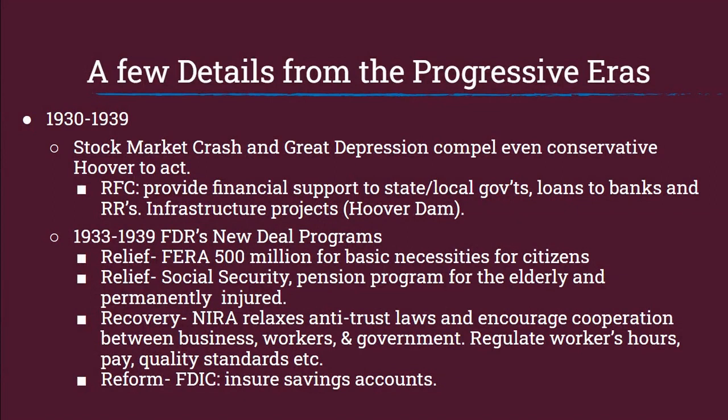Our last time period is the 1930s. The stock market crashed in late 1929 and the Great Depression lasted the entire decade. Hoover was president when it first began and was reluctant to act, thinking the market would correct on its own. However, by 1932 it still had not, and even the conservative Hoover acquiesced and began government intervention programs — one of which was the RFC, which provided financial support to state and local governments and loans to banks and railroads. He also signed into action infrastructure projects, the most well known being the Hoover Dam.